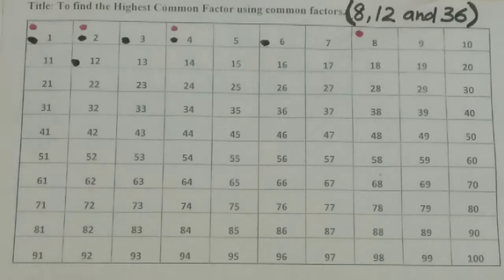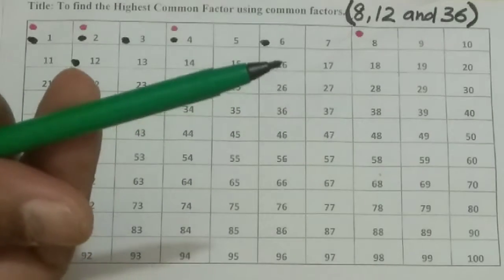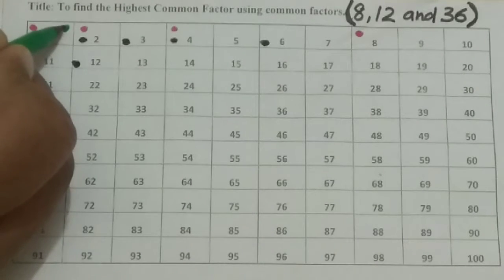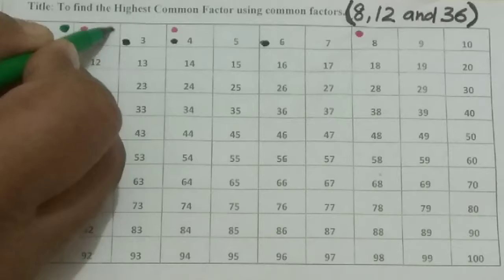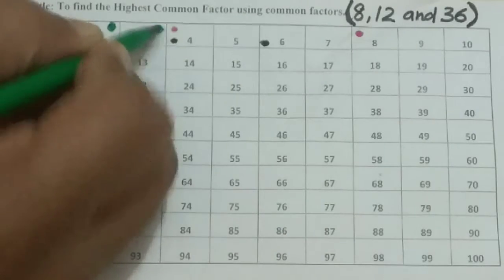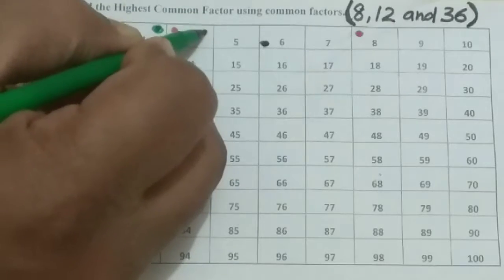Now comes the next number and it is with the green sketch pen, so it is for 36. So 1, yes it is visible. Then 2 also, yes obviously. 3 yes. 4 yes, 4 times 9 is 36.